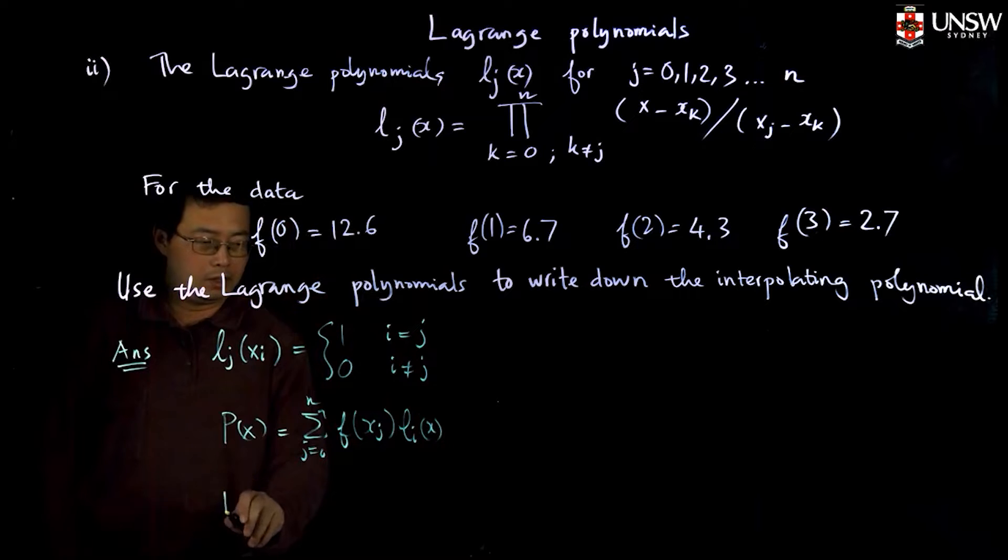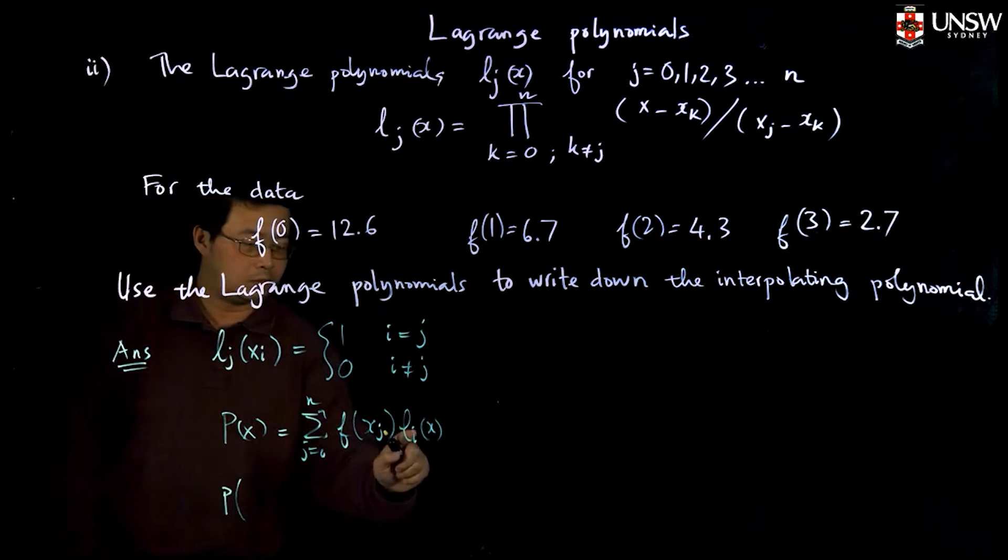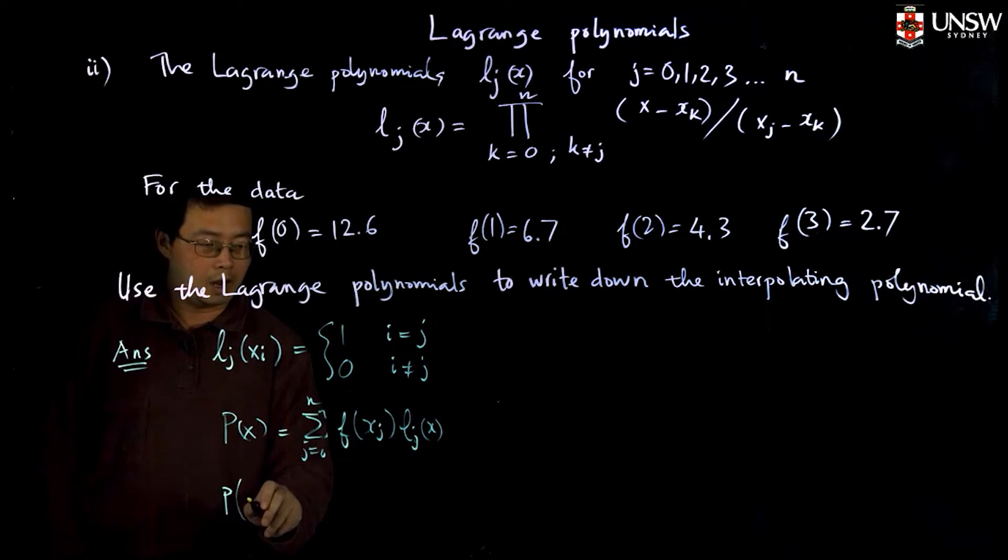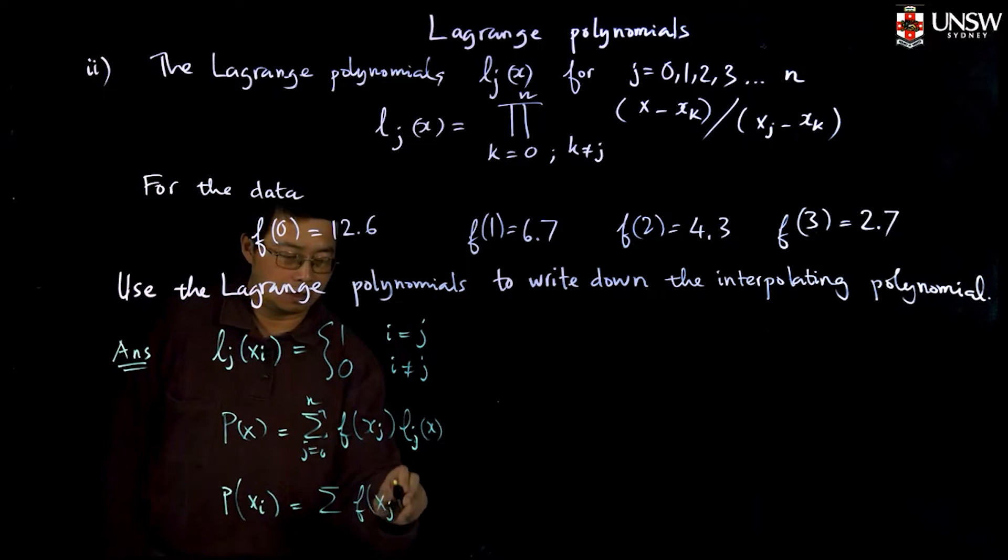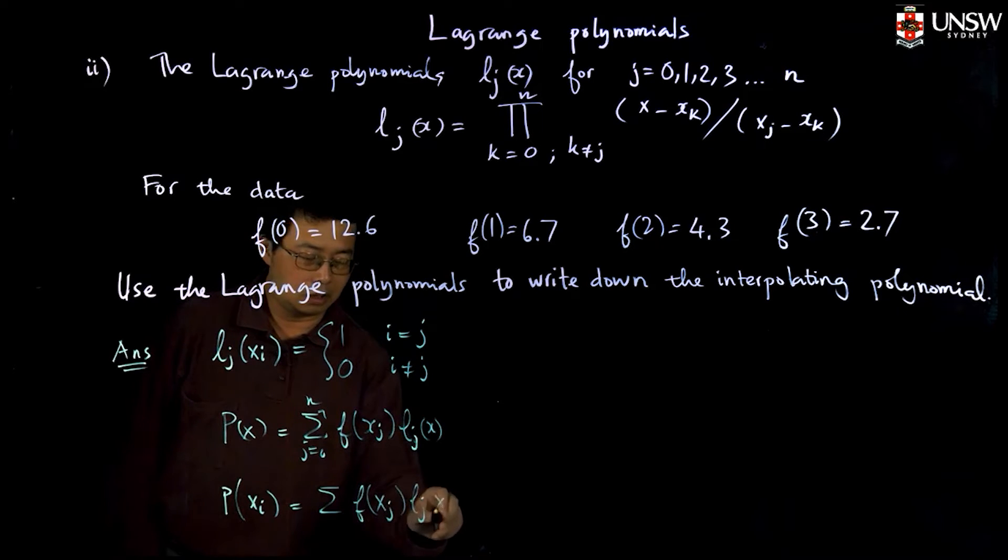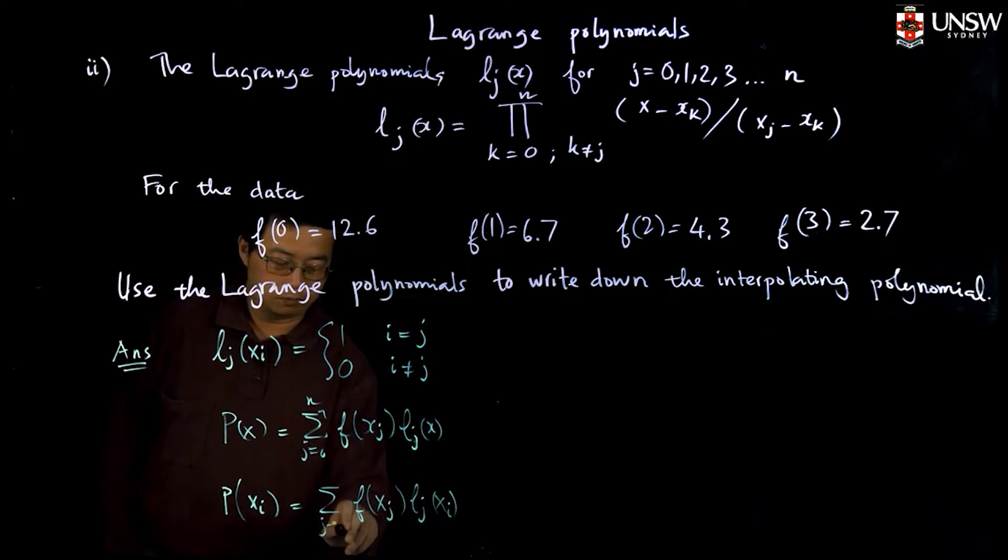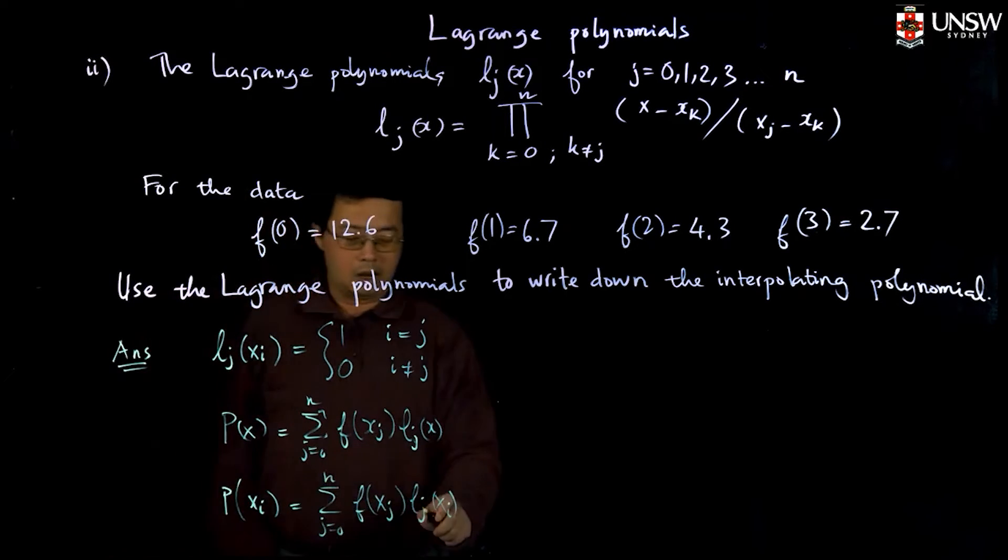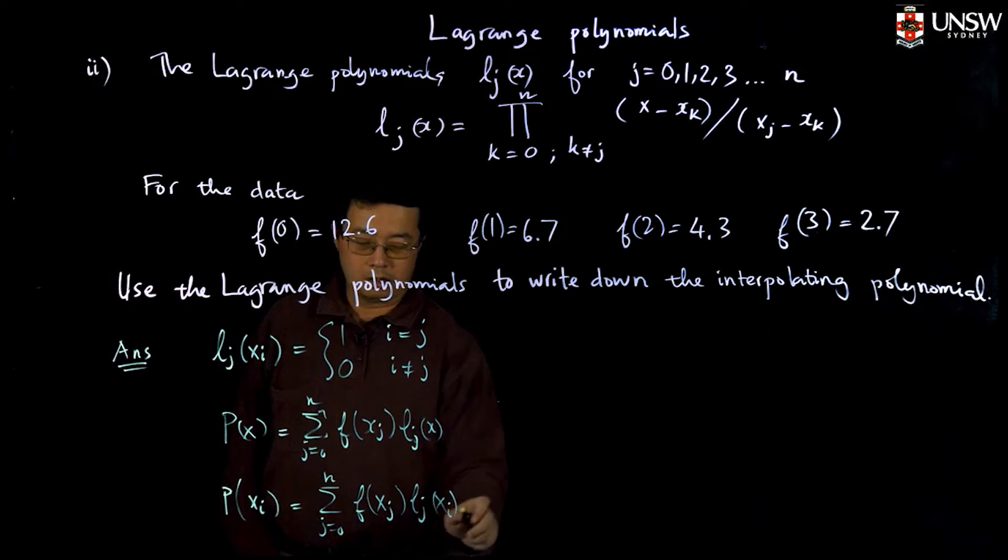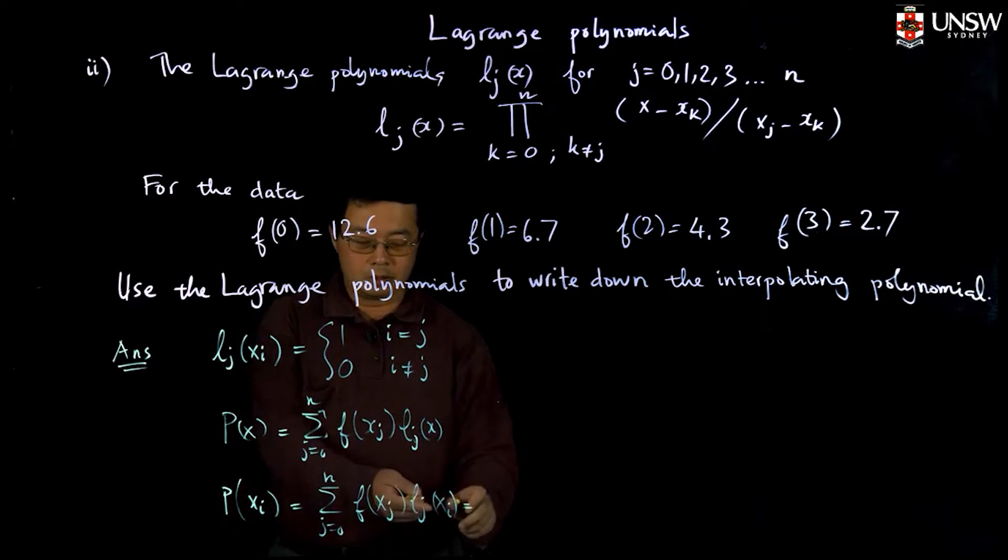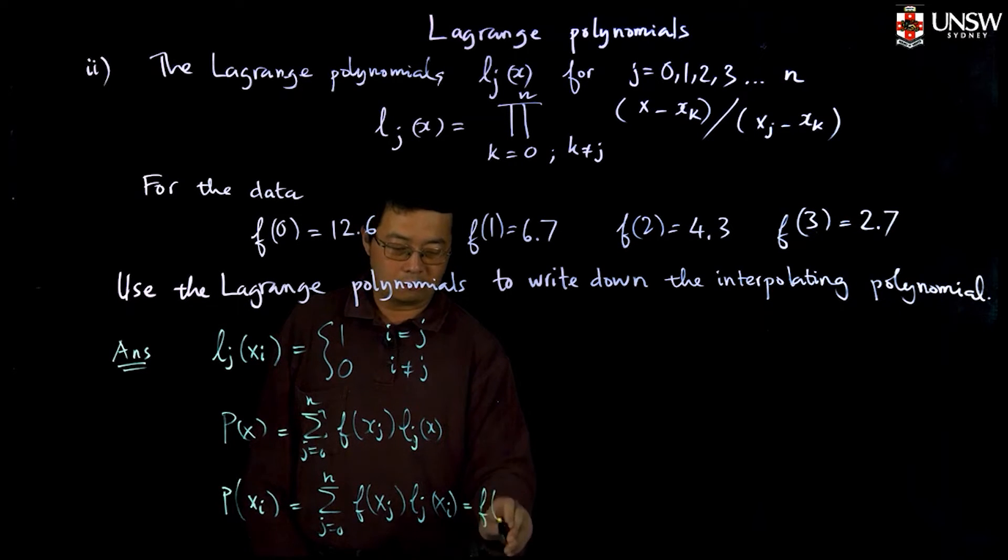If I put in P(x_i), then I have sum of f(x_j) times l_j(x_i), j from 0 to n. Remember that this one equals 1 only when i equals j and equals 0 when i different from j, so this will reduce to only f(x_i).